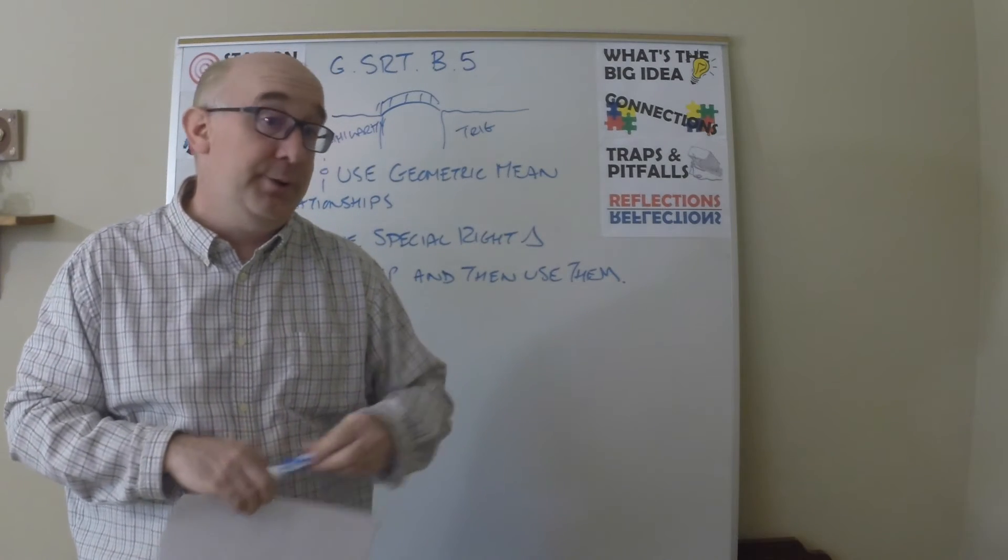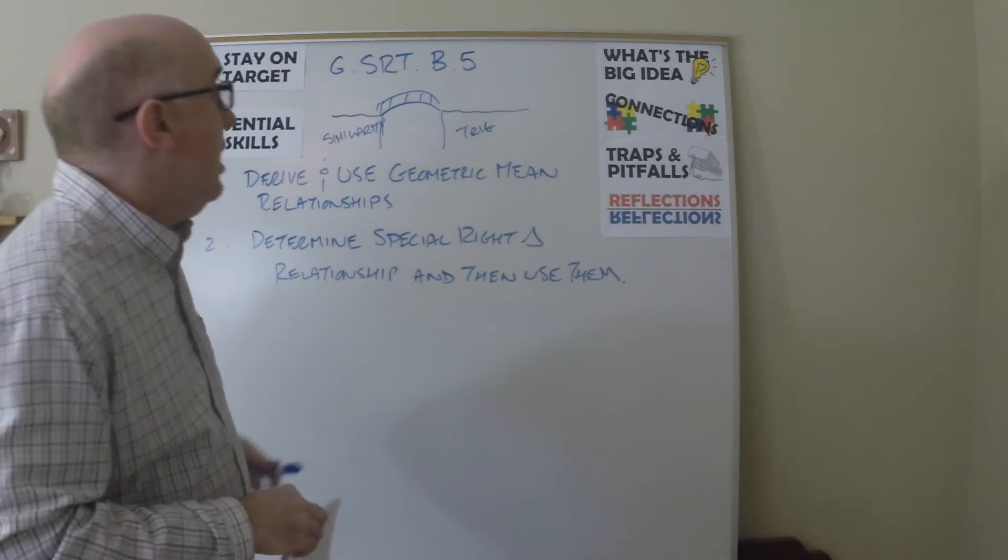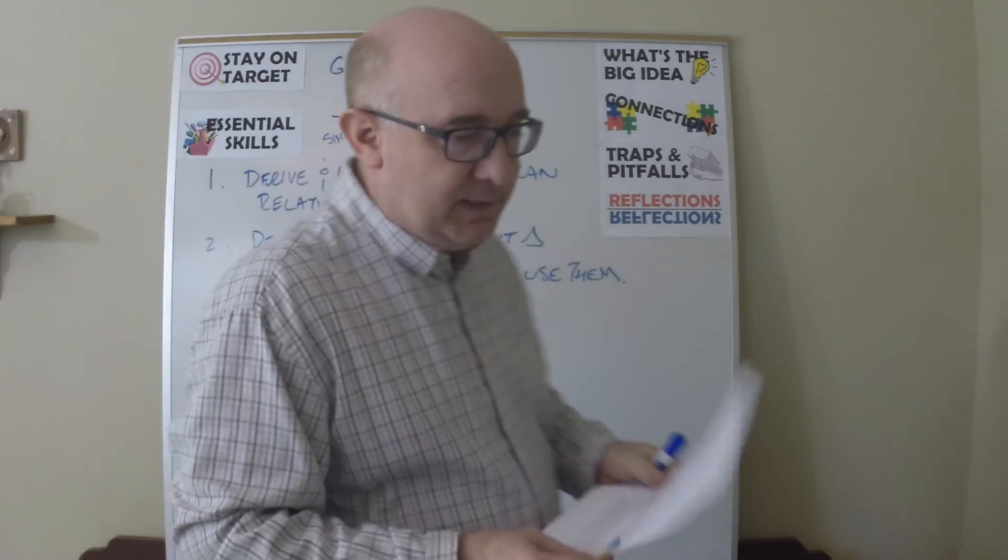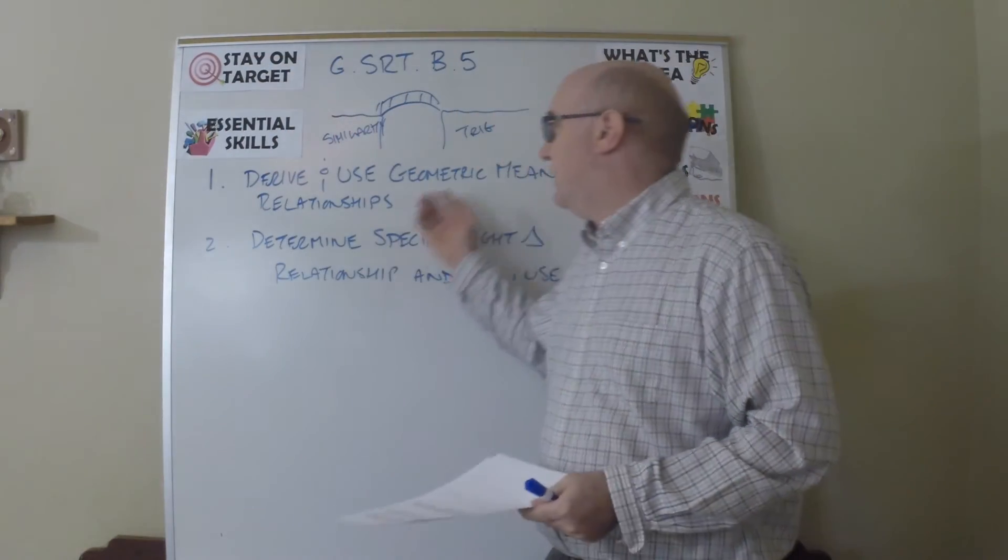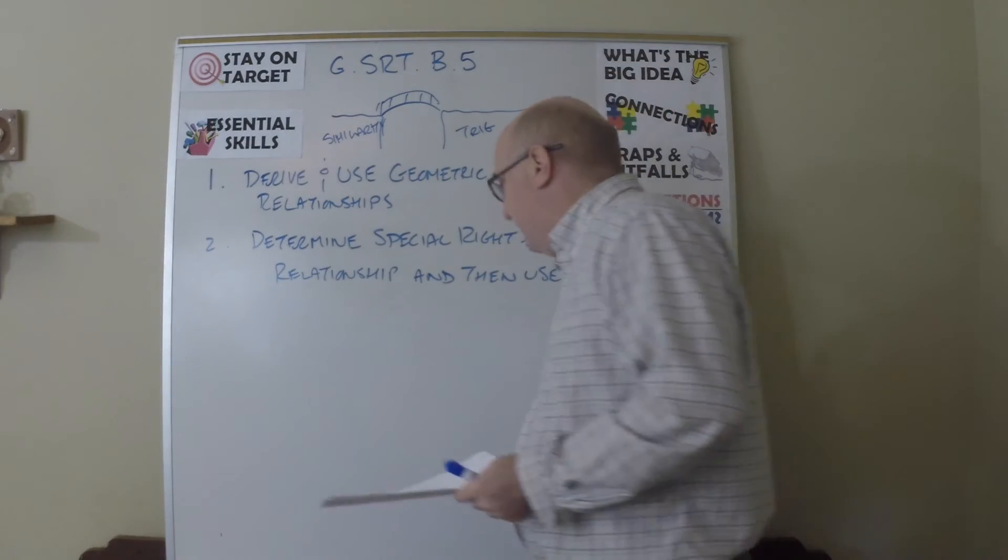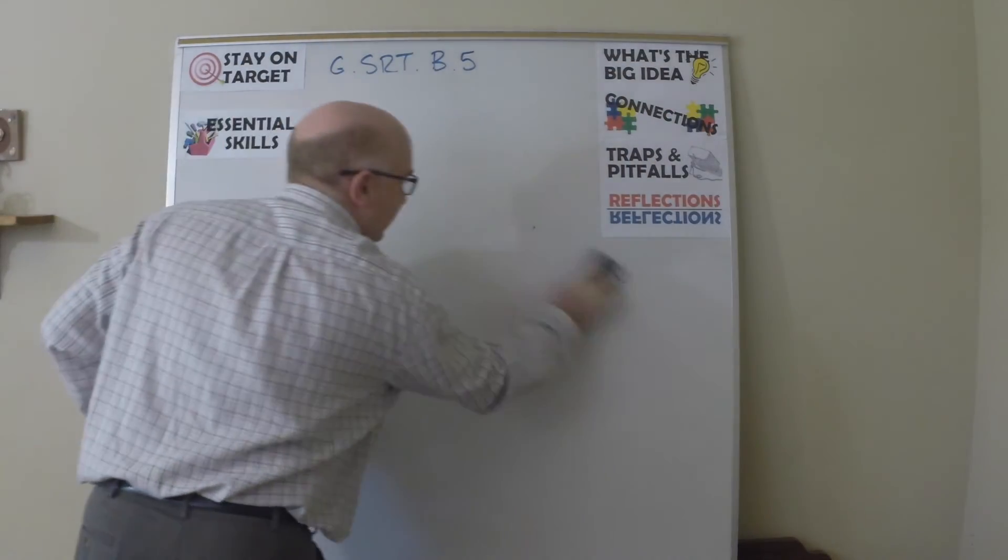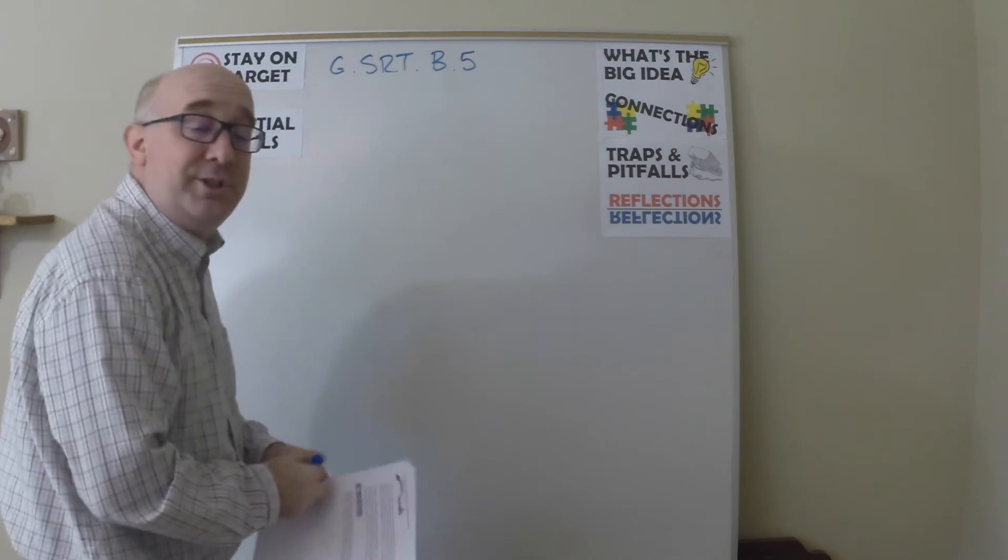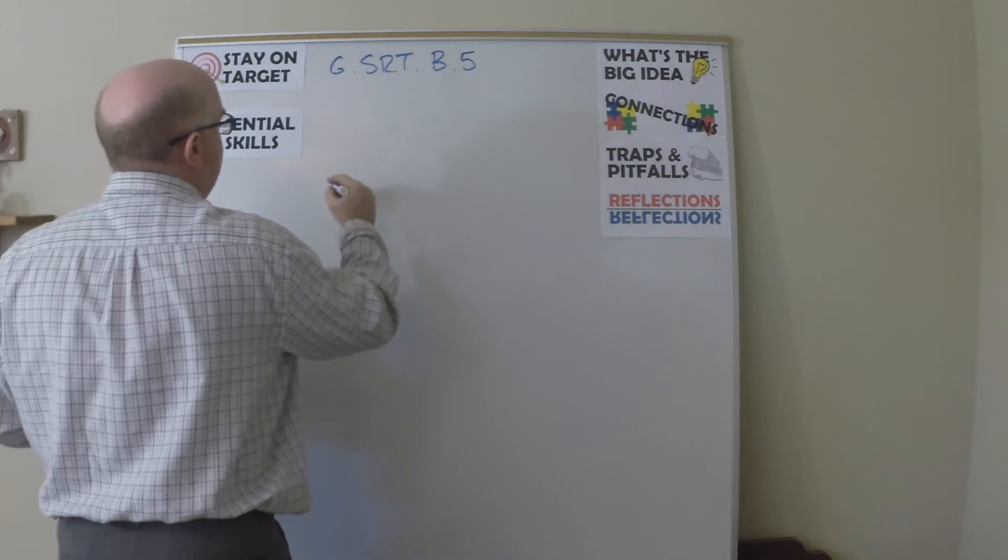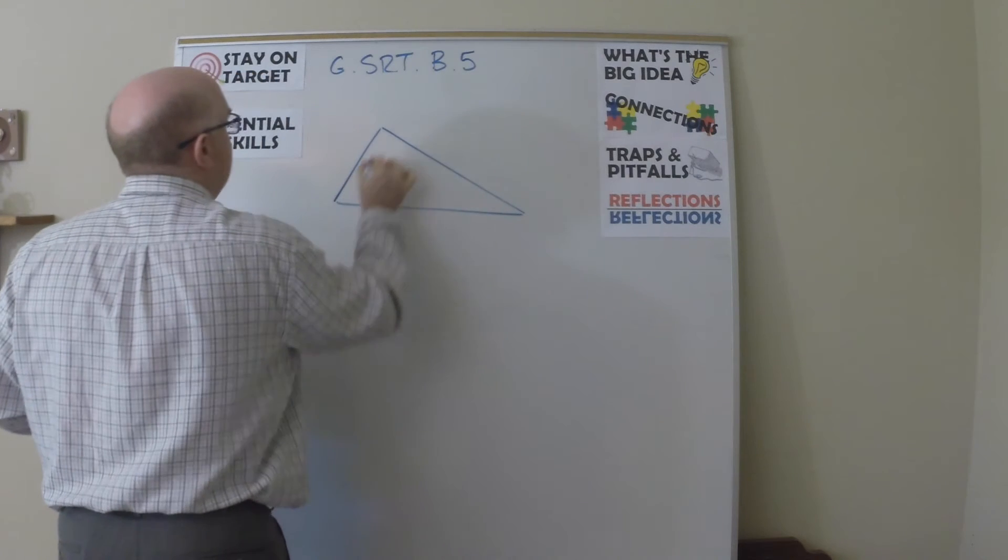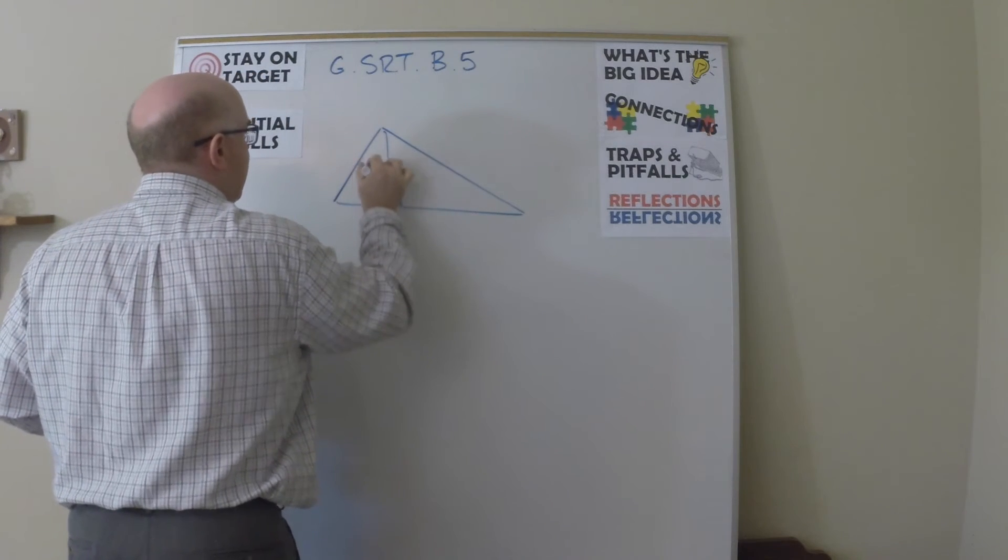And if you don't do them here, I don't know where you're going to do them. So do them. All right, traps and pitfalls, I guess. You know the common issues in this. Geometric mean is just difficult for students to know where it comes from. It's hard to diagram to show them that in this triangle that there are three similar triangles.